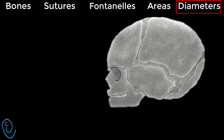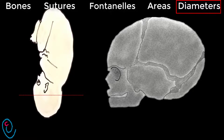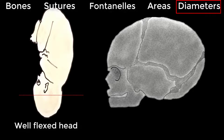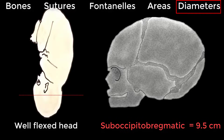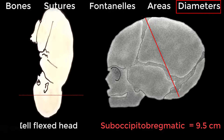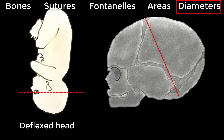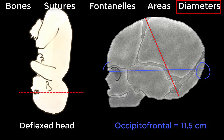Regarding diameters, there are longitudinal and transverse diameters. The presenting longitudinal diameter depends on the degree of flexion of the fetal head. If the fetal head is well flexed, the presenting diameter is the sub-occipital bregmatic diameter, which extends from the center of the bregma and measures 9.5 cm. With a deflexed head, the presenting diameter is the occipital frontal, which extends from the occipital eminence to the root of the nose and measures 11.5 cm.